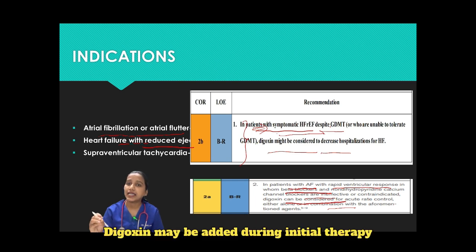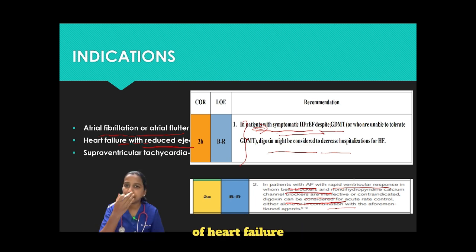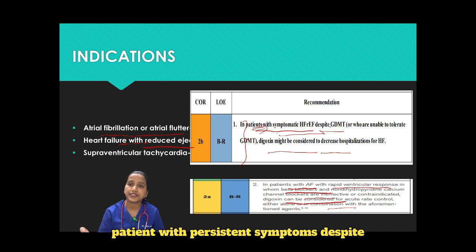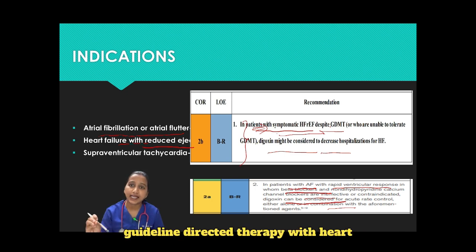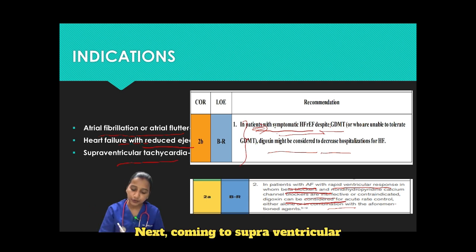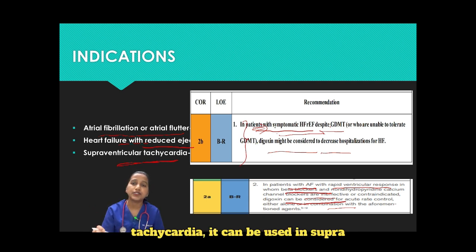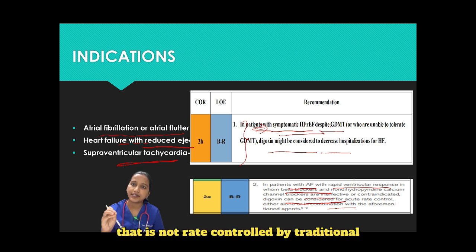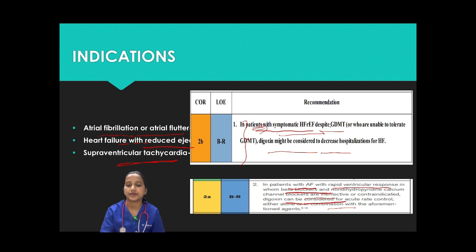Digoxin may be added during initial therapy of heart failure with severe symptoms, or may only be used in patients with persistent symptoms despite guideline-directed therapy with heart failure with reduced ejection fraction. It can also be used in supraventricular tachycardia that is not rate-controlled by traditional therapies.